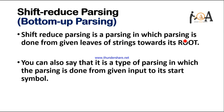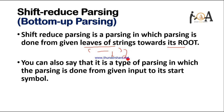Shift-reduce parsing is a parsing in which parsing is done from the given leaves of strings towards the root. If we are given an input string, our goal is to find its root by using the production rules. We are converting leaves so that we can achieve the root element, and this kind of parsing is termed as bottom-up parsing or shift-reduce parsing.